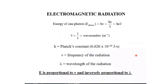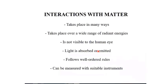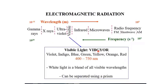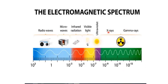Higher frequency means higher energy, and lower wavelength also means higher energy. Therefore, energy is highest for gamma rays, then decreases through X-rays, ultraviolet, visible light, infrared, and microwaves. The waves with the least energy in the electromagnetic spectrum are radio waves.